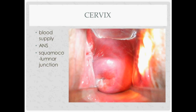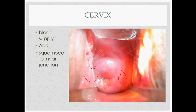Looking at the cervix: the blood supply comes from the uterine artery and travels along the 3 and 9 o'clock positions, so you want to avoid disrupting those areas. The cervix is supplied by the autonomic nervous system, so manipulation can cause vasovagal reactions — the parasympathetic tone increases, sympathetic tone decreases, and patients' blood pressure can drop to the point of passing out. The endocervical canal contains the squamocolumnar junction, which is critically important in cervical cancer.